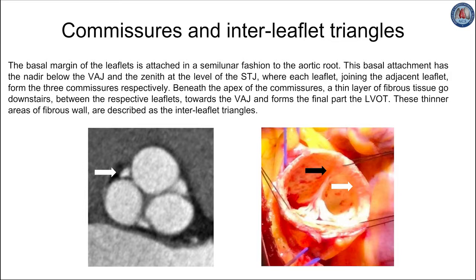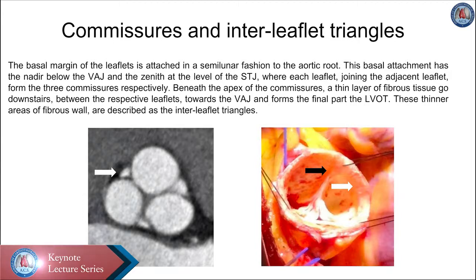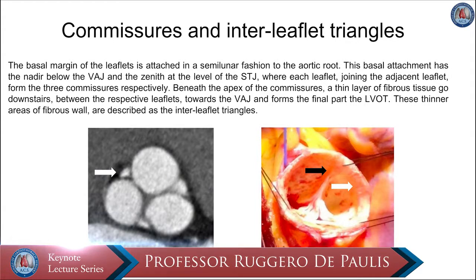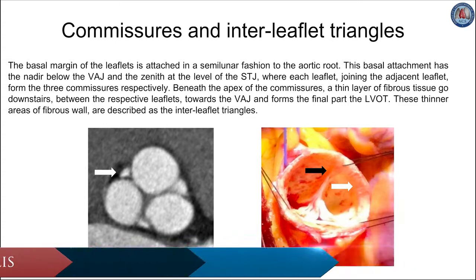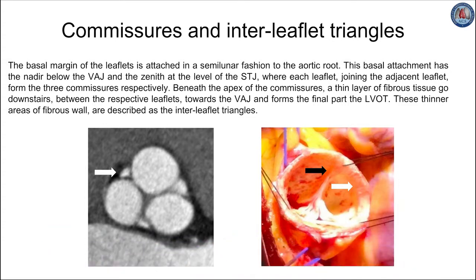Underneath the apex of the commissure between the respective leaflets, there is a thin layer of fibrous tissue in the shape of a triangle, with its base toward the ventricular-arterial junction, that forms the final part of the LVOT. These thinner areas of the fibrous wall are described as interleaflet triangles. Furthermore, the interleaflet triangles separate the inside of the left ventricle from the extra-cardiac space.